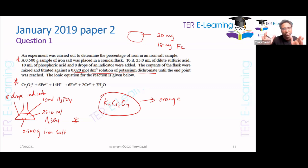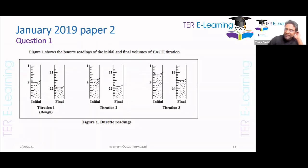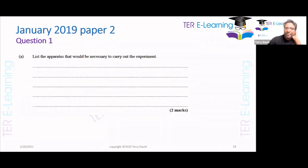Question one — try to break down question one; it could be a little difficult. It shows the burette readings of the initial and final volumes of each titration. They said: list the apparatus that would be necessary to carry out this experiment. All CXC is trying to ask you is: what do I need in order to perform this titration?